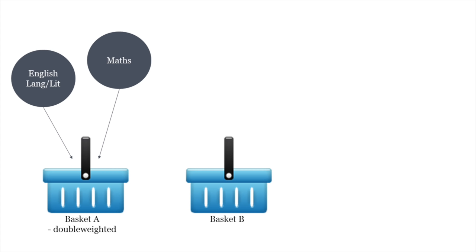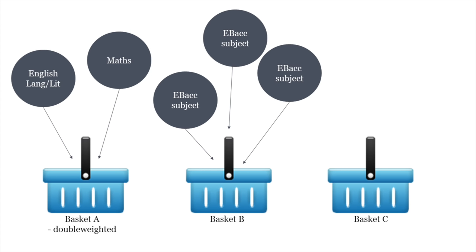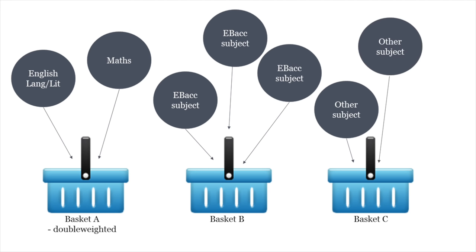Basket B consists of the three best-scoring EBAC subjects. Basket C consists of the three highest-scoring other GCSE subjects or high-value vocational qualifications. EBAC subjects can be included in Basket C as well, but they don't have to be.